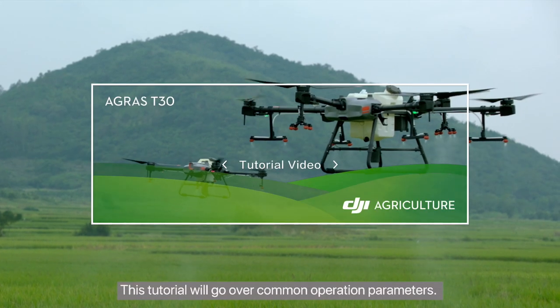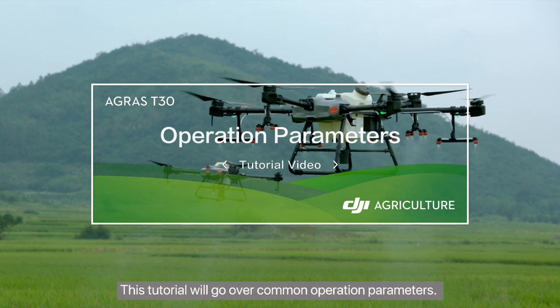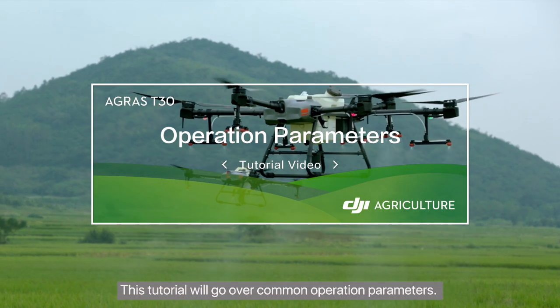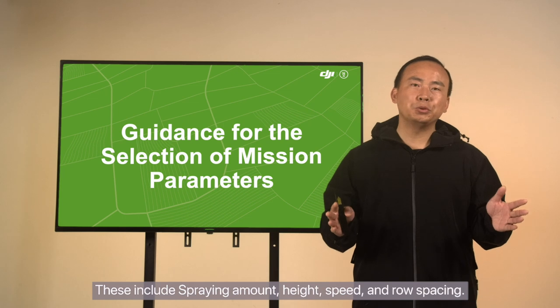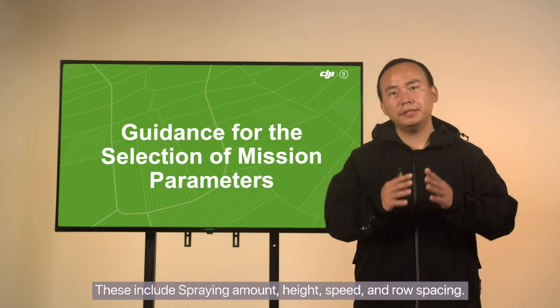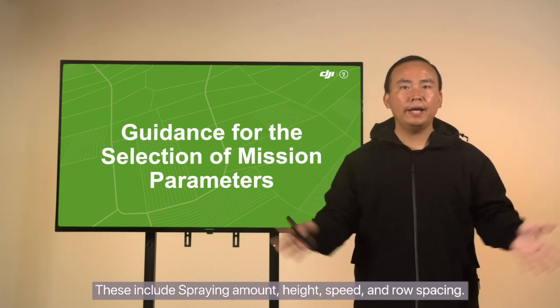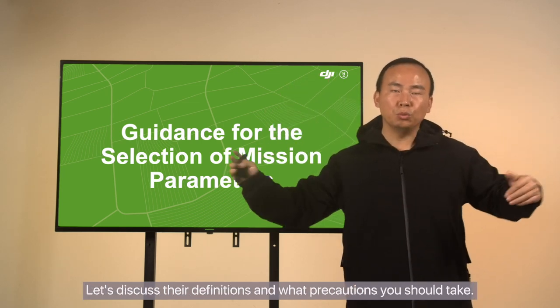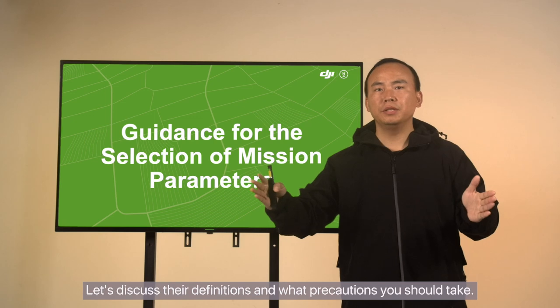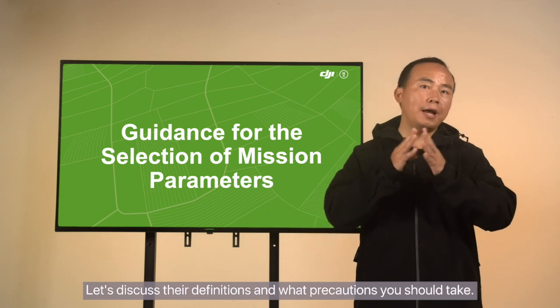This tutorial will go over common operation parameters. These include spraying amount, height speed, and row spacing. Let's discuss their definitions and what precautions you should take.